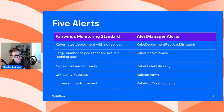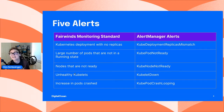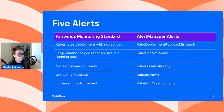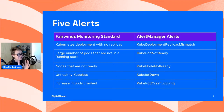The fourth thing to check for is unhealthy kubelets. There's one kubelet on each node and they help schedule pods — if your kubelet is down, your Kubernetes cluster won't be working as expected. Finally, the fifth alert is an increase in the number of pods crashed. If you suddenly have lots of pods crashing, something might be wrong with the deployment rollout or the underlying health of your cluster. Those are the five things I recommend monitoring and alerting on from the Fairwinds monitoring standards.